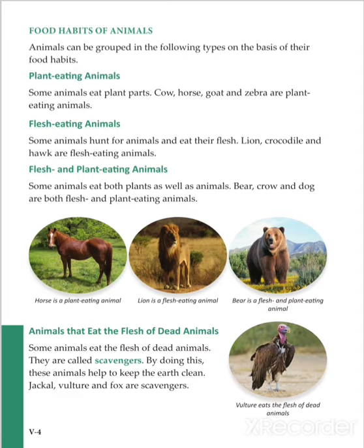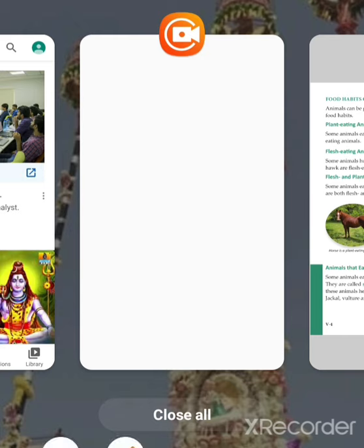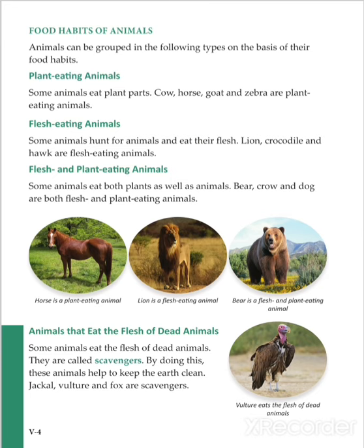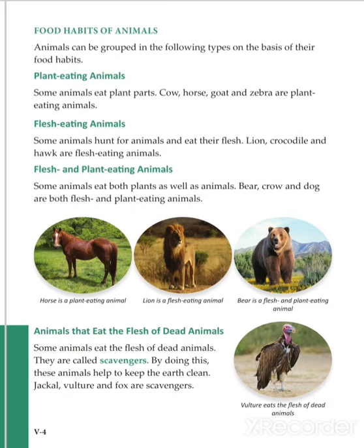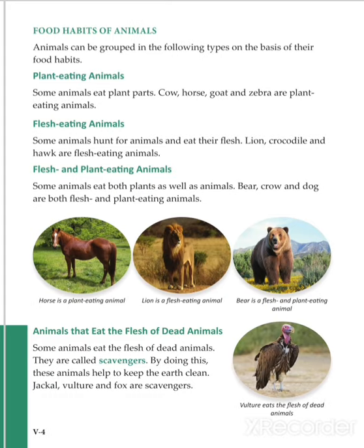And there are animals that eat only dead animals. Let's see each one. Cow, horse, goat, and zebra are known as plant-eating animals. Lion, crocodile, and hawk are called flesh-eating animals. Bear, crow, and dog eat both plants and flesh, so they are called flesh and plant-eating animals.